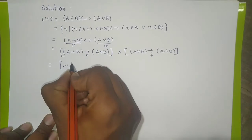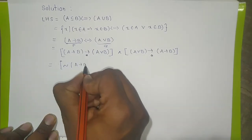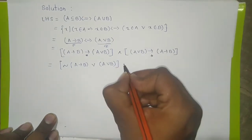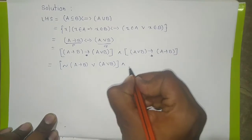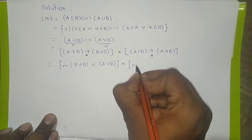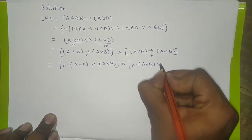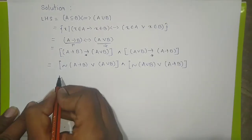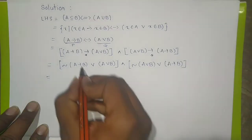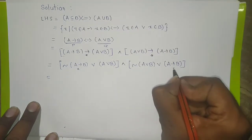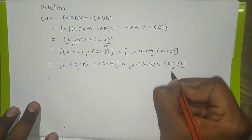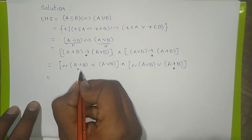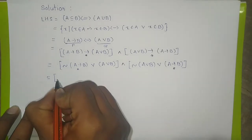Now we simplify the implications. The negation of the first term, or with the second term as it is, and the middle sign as it is. Here also we simplify the other two implications in the next step.